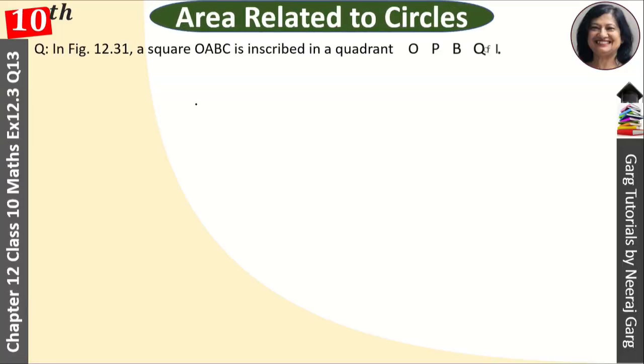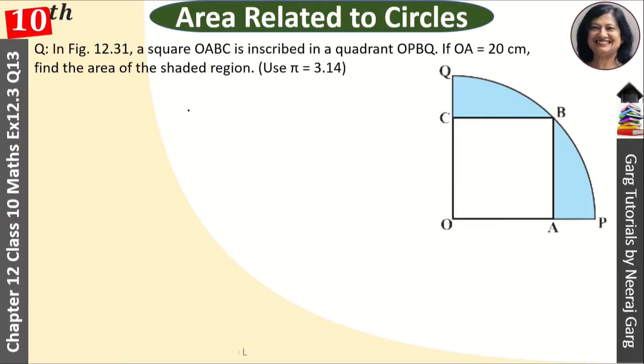Hi, this is Neeraj Garg and you are watching class 10th chapter 12 area related to circles. In figure 12.31, a square OABC is inscribed in a quadrant OPBQ. If OA is equal to 20 cm, find the area of the shaded region. Use π equals 3.14.